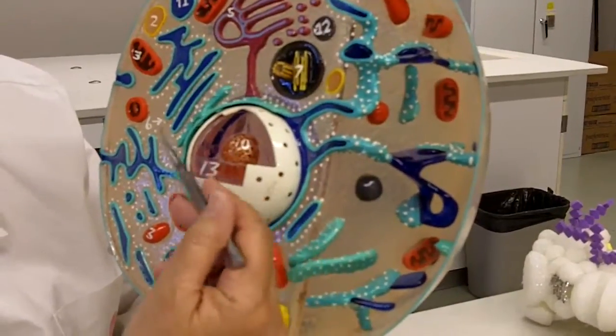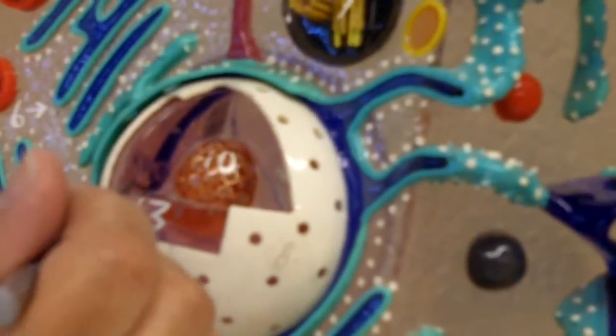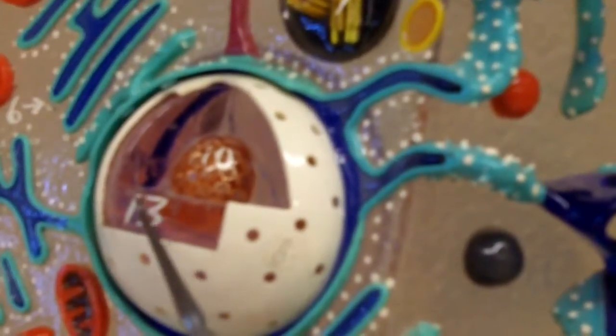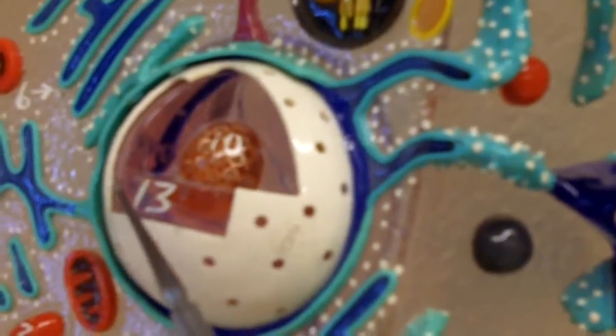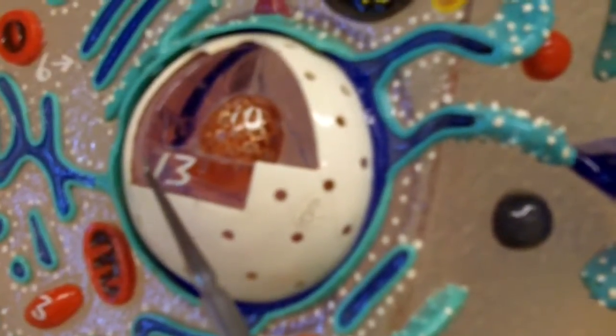Now in the nucleus, of course, we have the genetic material of the cell. In this cell, it looks like it's thread-like, so that means it's called chromatin. It's non-dividing. When the cell gets ready to divide, undergo mitosis, then those chromosomes supercoil and condense and become visible as chromosomes.